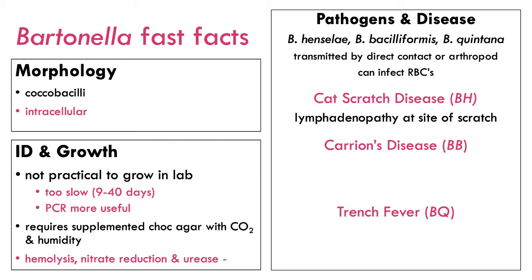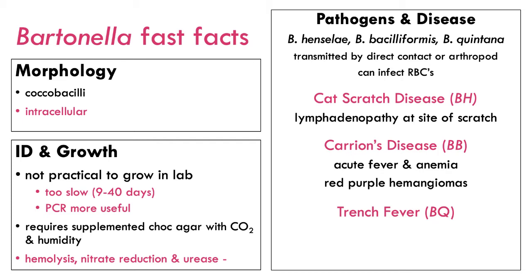Cat scratch disease causes lymphadenopathy — inflamed lymph nodes around the site of the scratch — which can always become bacteremia if untreated. Carrion's disease, caused by Bacilliformis, starts with acute fever but can cause severe anemia because these organisms infect and destroy red blood cells. You'll also see the formation of red-purple hemangiomas — little blood tumors — popping up throughout the body.